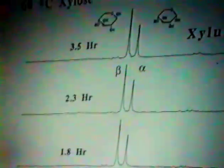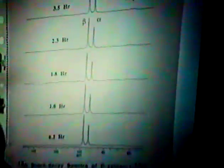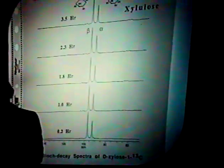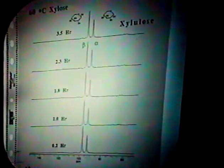The xylose also isomerizes. This one is at a lower temperature where the rate is slower, and the xylulose peaks are small — those little bumps in the spectrum — but they are measurable and can be expanded for clearer analysis.